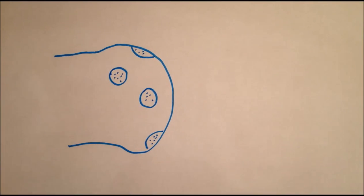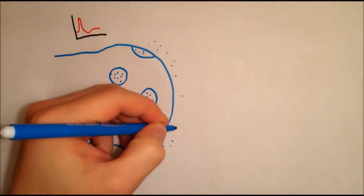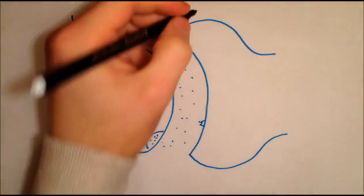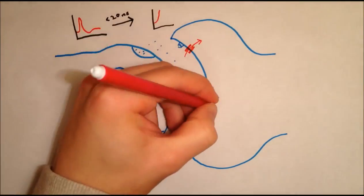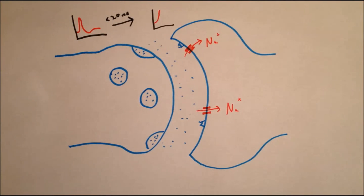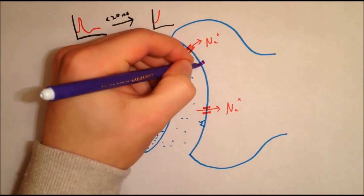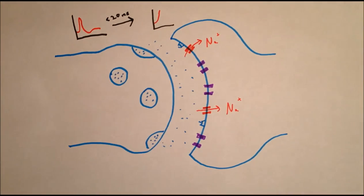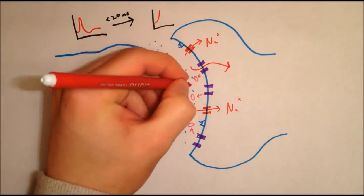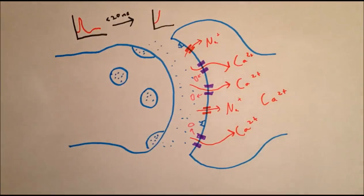If the presynaptic neuron fires first, it becomes depolarized and releases glutamate. The glutamate binds to AMPA receptors at the postsynaptic neuron, causing it to depolarize. As the cell becomes depolarized, NMDA receptors become unblocked. Glutamate binds to them and this causes a large calcium influx.